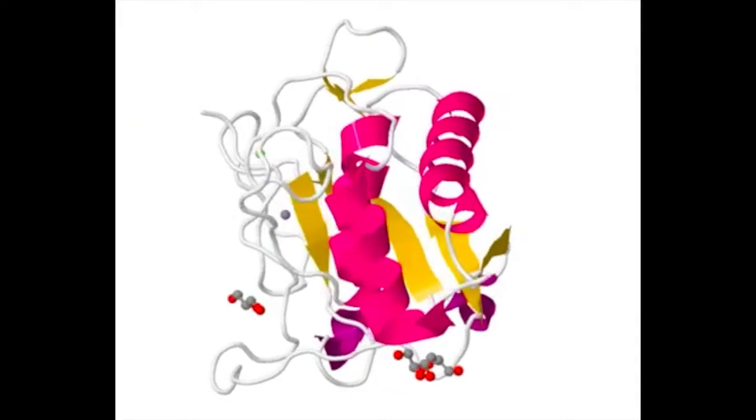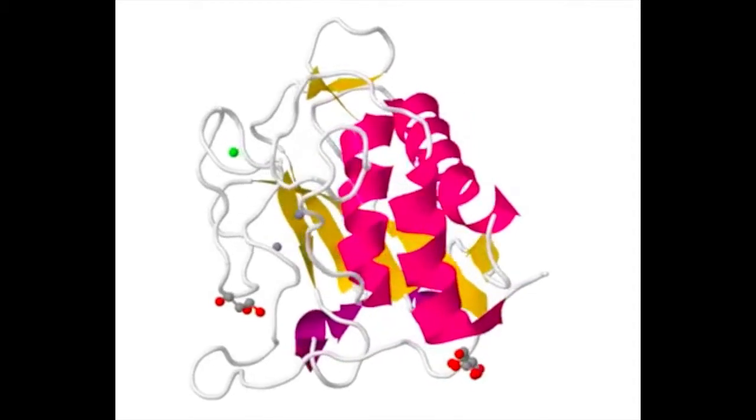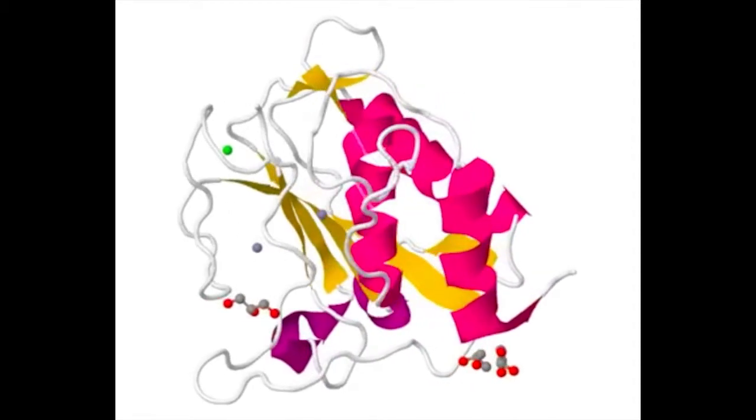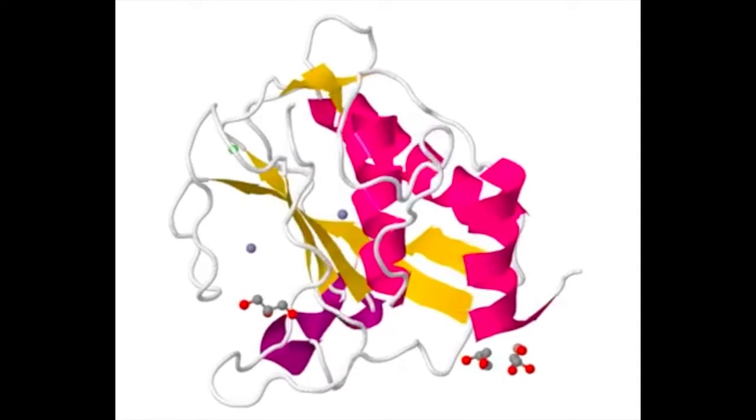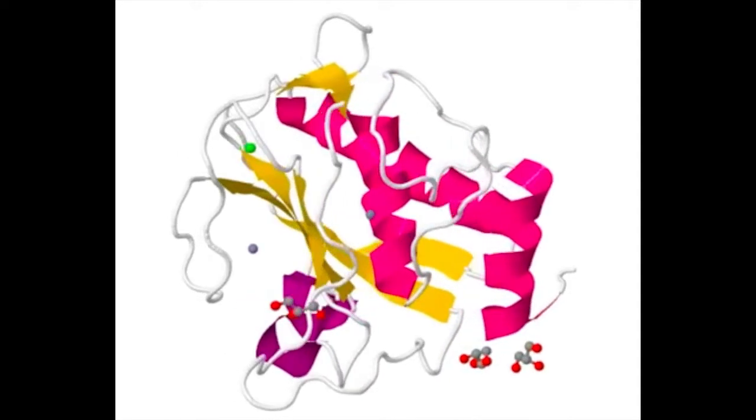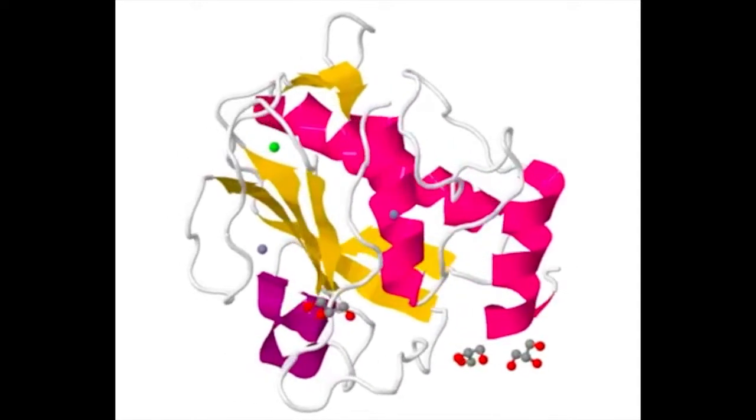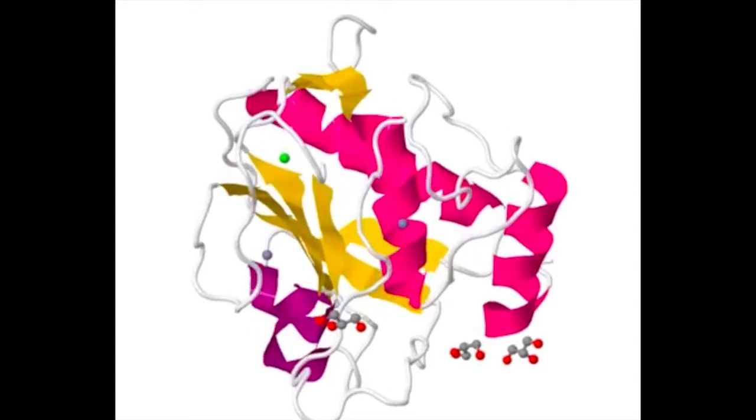The minimal consensus domain architecture of MMPs comprises a signal peptide, a 60-90 residue globular pro-domain with a conserved sequence motif, including a cysteine-engaged cysteine-switch, and a catalytic domain.